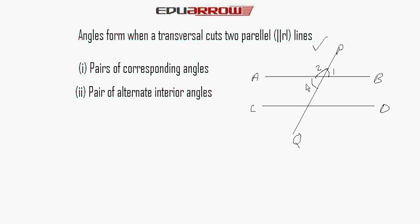The vertically opposite angle pairs here are: angle 1 and angle 3, angle 8 and angle 6, angle 2 and angle 4, and angle 7 and angle 5.